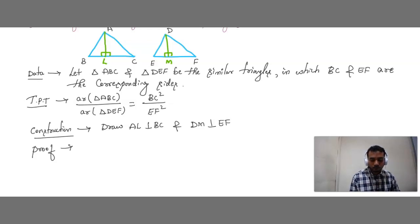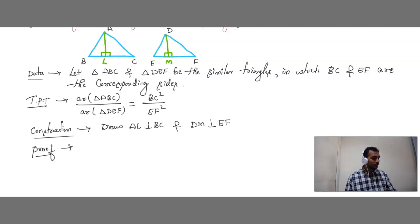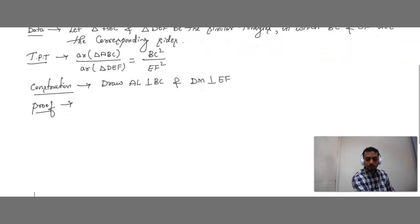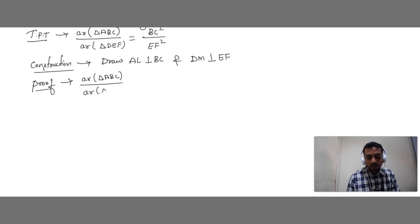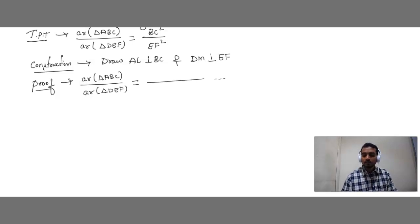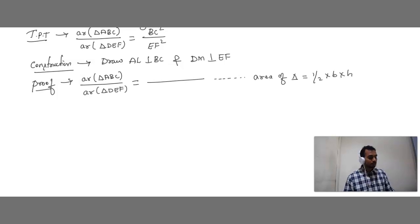Now in the proof, what we should do: we start with the LHS. Write Area of Triangle ABC divided by Area of Triangle DEF. We know that the area of a triangle equals half into base into height.